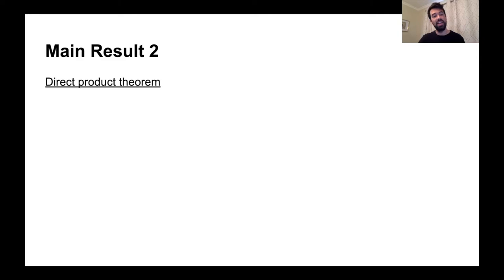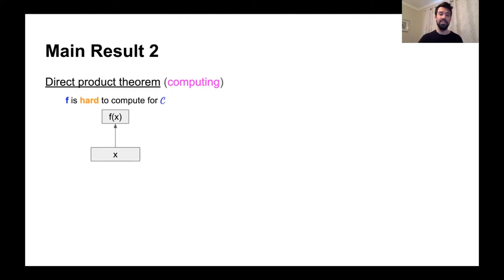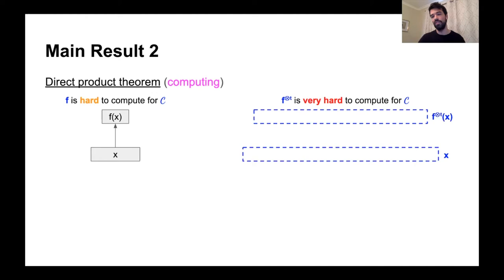This question is directly answered by a direct product theorem. In the context of computing, a direct product theorem says: suppose you have a function F that is hard to compute for the class C. You can build a function F^⊗T that is very hard to compute for C. F^⊗T takes its input, chops it up into T parts, and applies the hard function F to each part. A very well-known direct product theorem is Yao's XOR lemma.